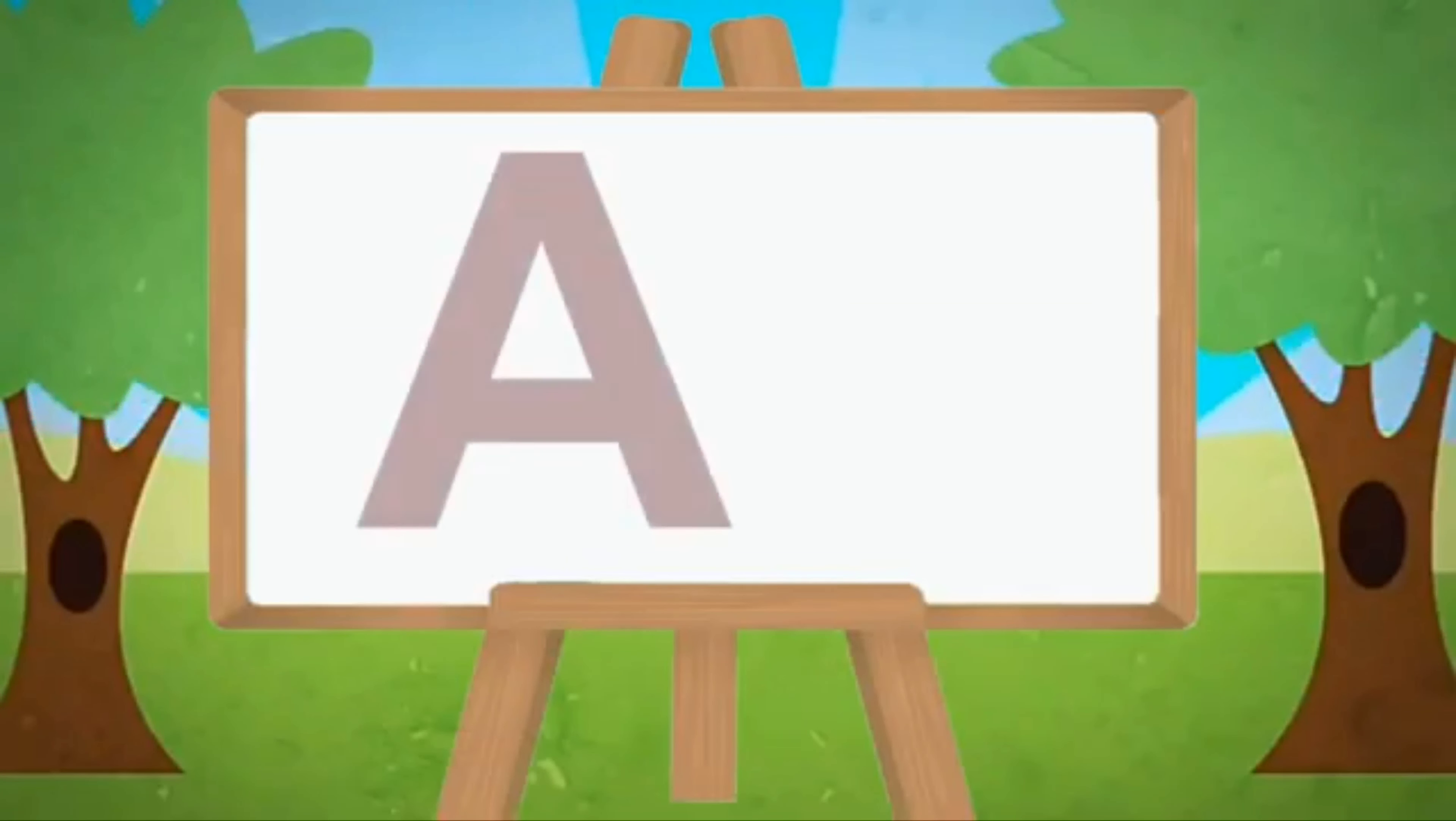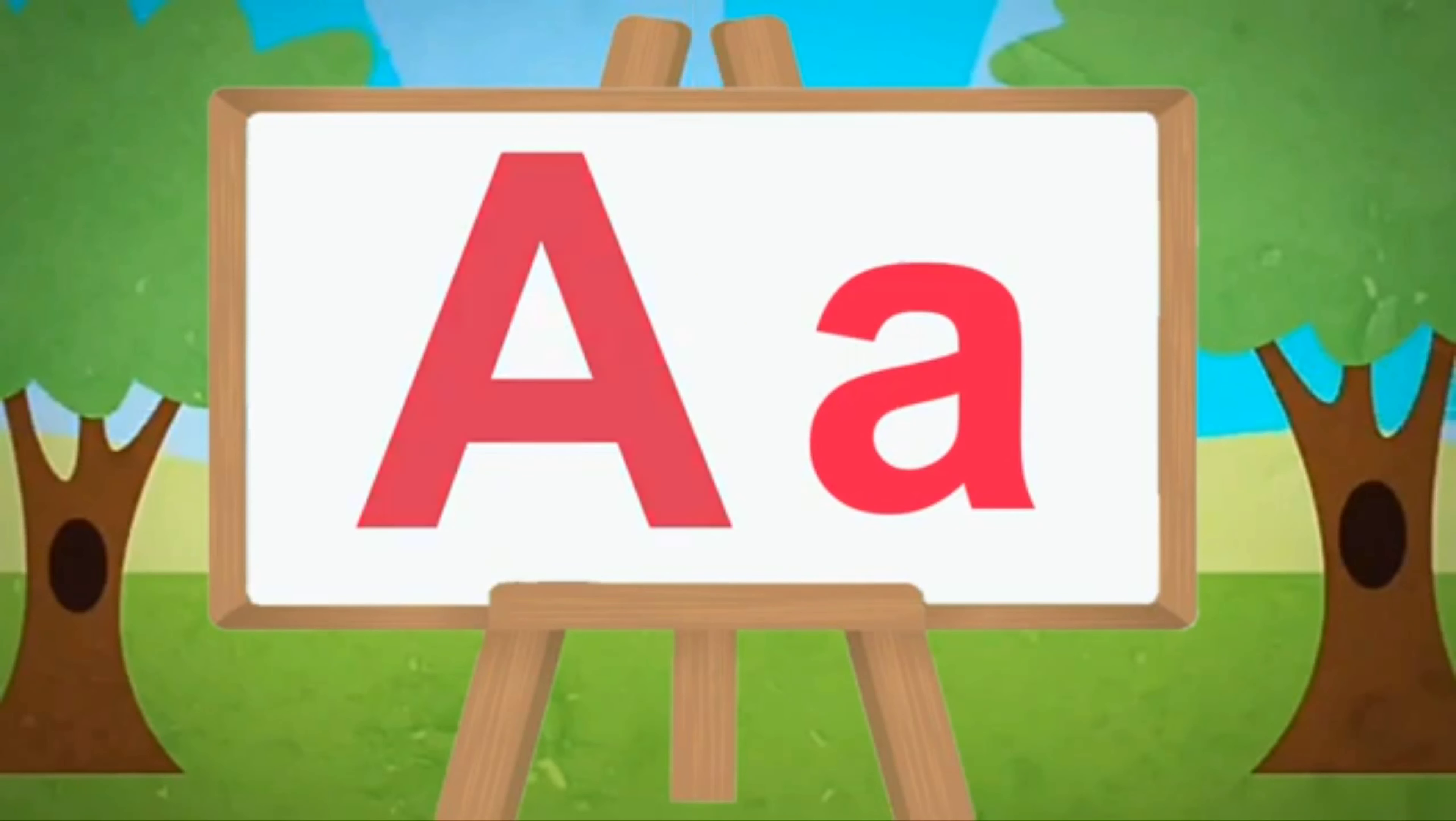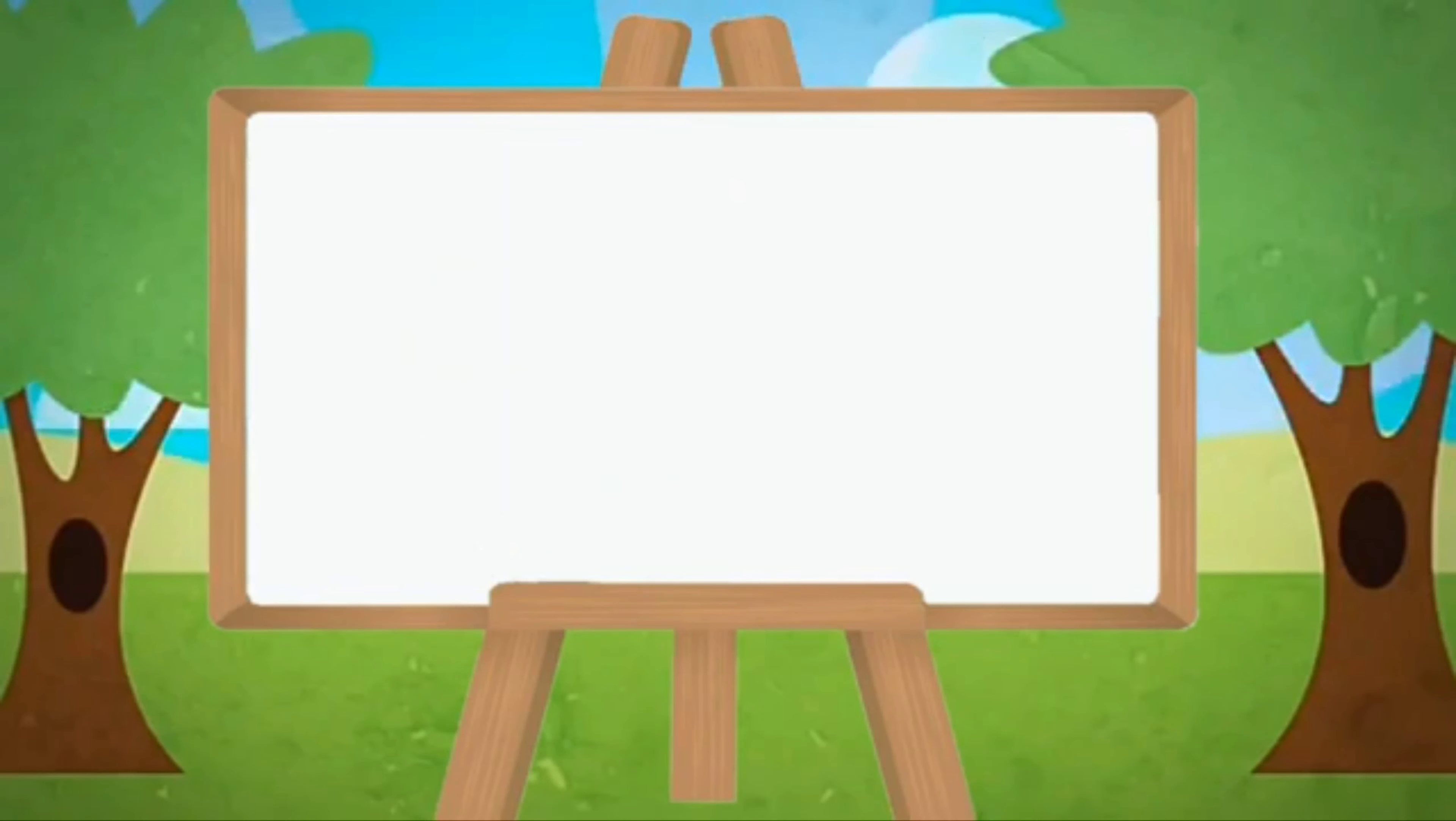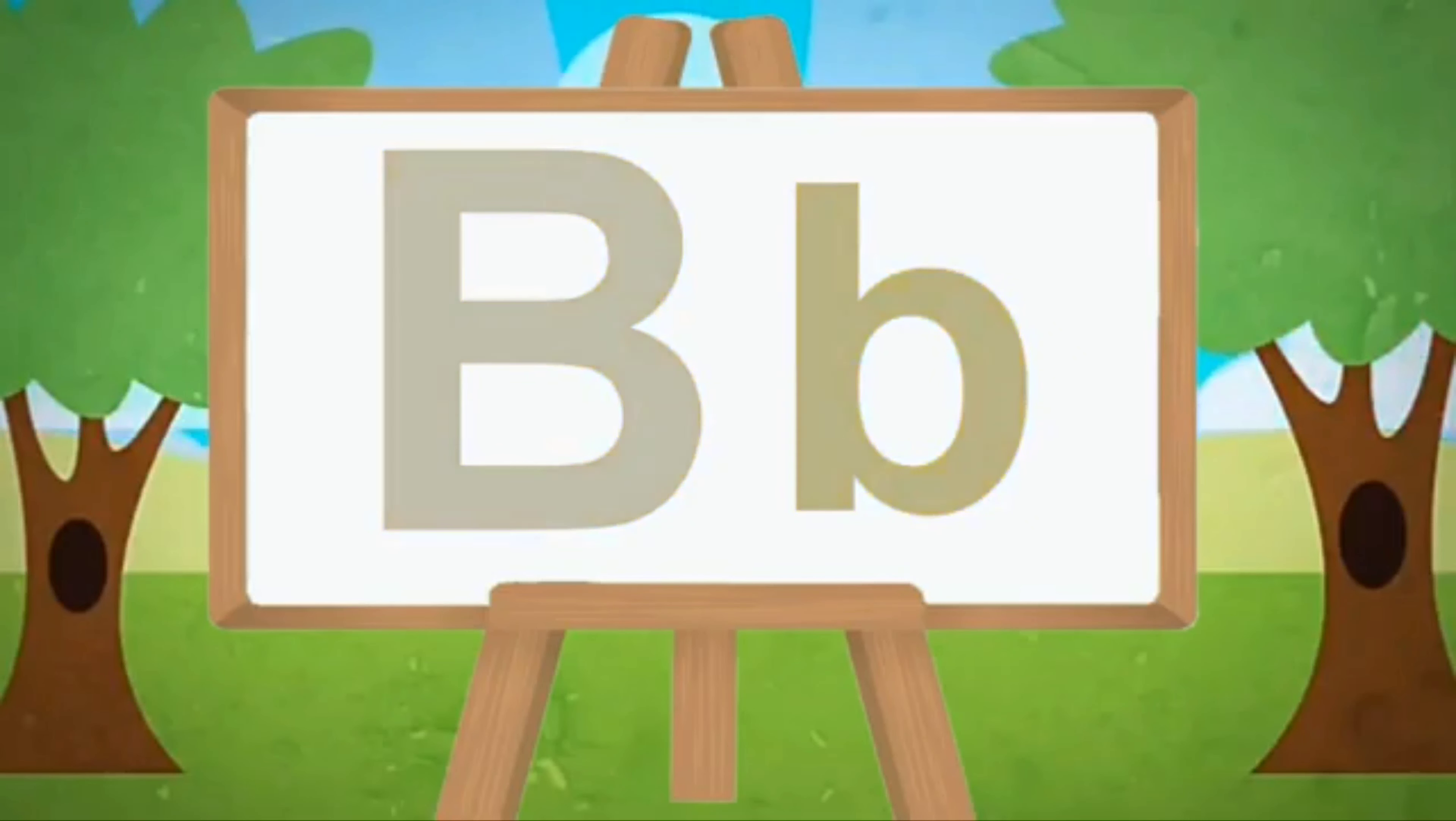Let's learn the capital and small alphabets. Capital A, small a. A for apple, A for aeroplane. Capital B, small b. B for ball, B for bat.